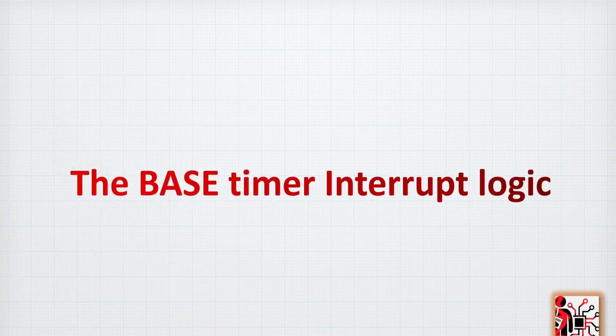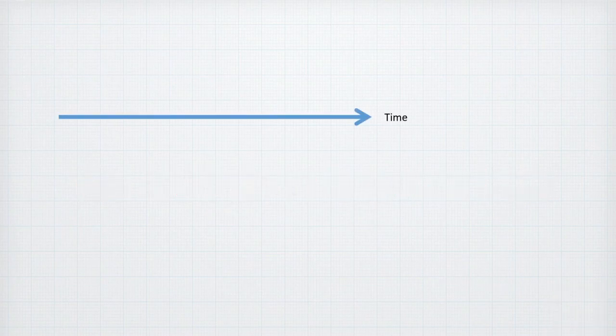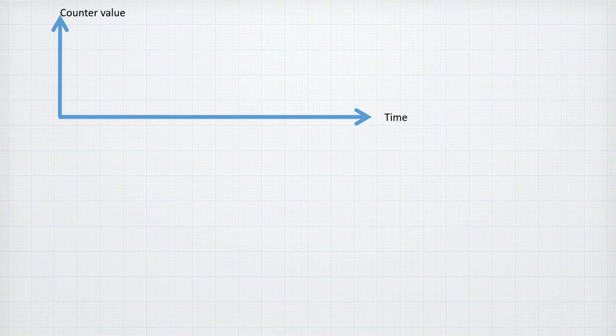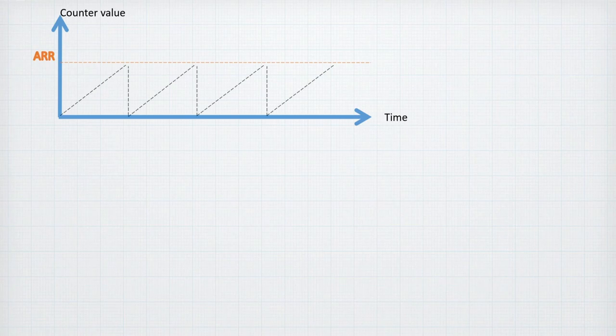Let's look at how the base timer interrupt logic works. Taking the x-axis as time and y-axis as the counter value of the timer, we set up the auto-reload register (ARR). When the timer runs, the counter value increases, reaches the ARR, and then resets back to zero each time.